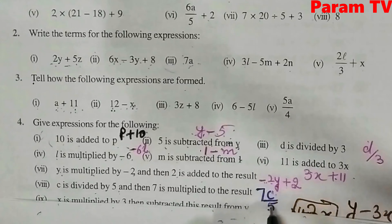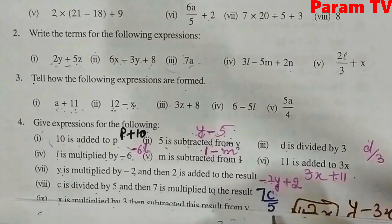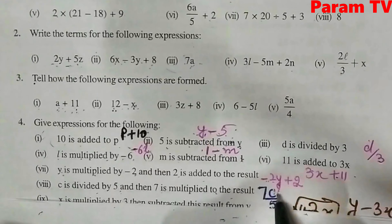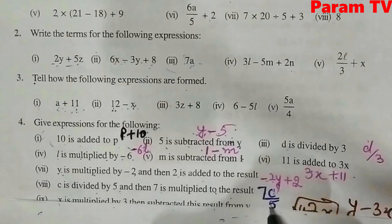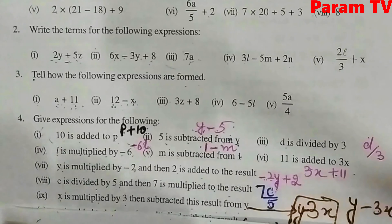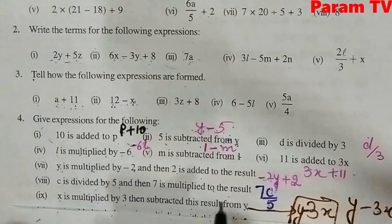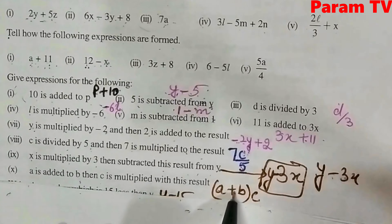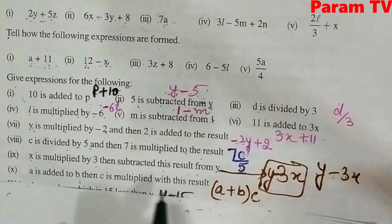C is divided by 5 and then 7 is multiplied to the result — first C divided by 5, then multiply by 7: 7C upon 5. X is multiplied by 3 and then the result is subtracted from Y — Y is written first: Y minus 3X. A is added to B and then C is multiplied with the result — A plus B in bracket, multiplied by C: C(A plus B).